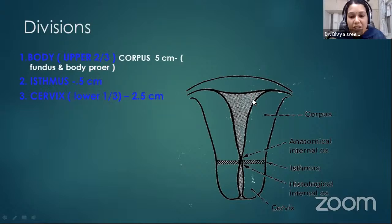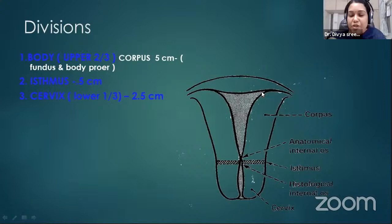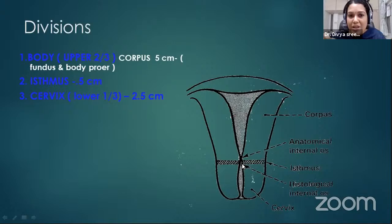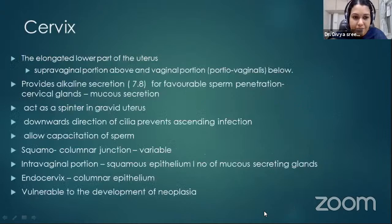The uterus is divided into mainly three parts: the body, the isthmus, and the cervix. The body is further divided into the corpus area — the fundus is the area above the opening of the fallopian tube, and below that is the body proper. The isthmus is the area between the anatomical internal os and the histological internal os, approximately 0.5 centimeters. The cervical area is about 2.5 centimeters, with half above the vagina and half within the vagina.